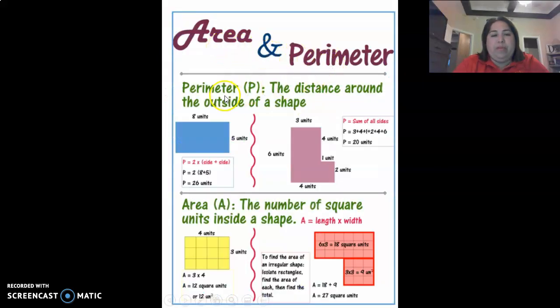Area and perimeter. Perimeter, the distance around the outside of the shape like right here. When it's a perfect square or rectangle these two sides are always the same and these two sides are always the same. Now if you have odd shapes like this one they usually give you the size, the numbers, the measurements.